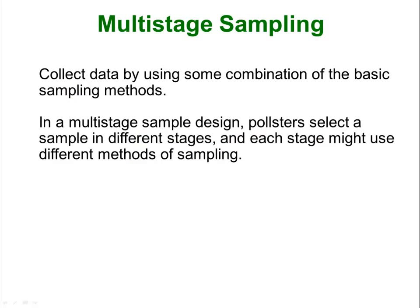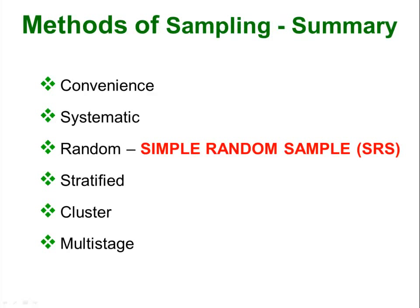Multi-stage sampling is simply using more than one of these techniques together — you sample one way and then sample another way. Here is a summary of those basic sampling techniques: convenience, systematic, and so on, where the simple random sample (SRS) is the gold standard we are always striving for.